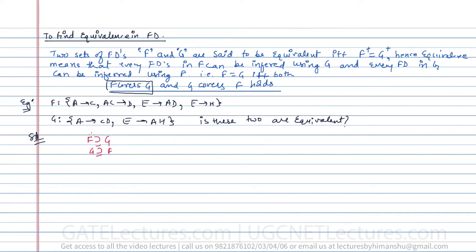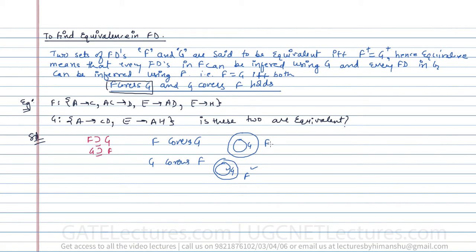When we say F covers G, that means every functional dependency in F can also be derived in G. When we say G covers F, every functional dependency in G can also be derived in F. If both of these hold, then we can say F is equal to G.